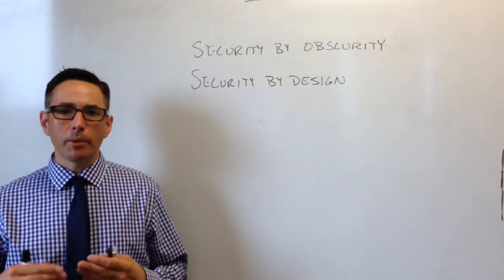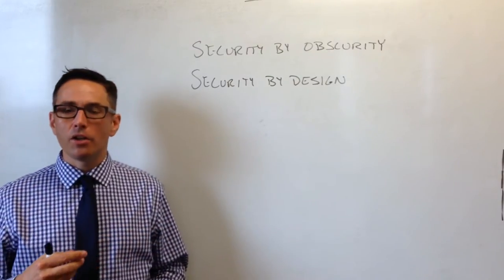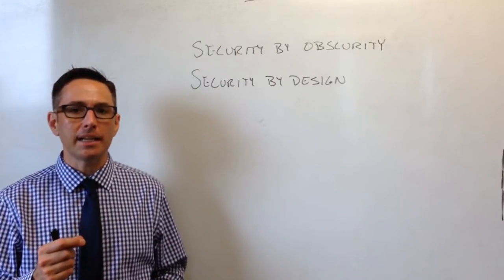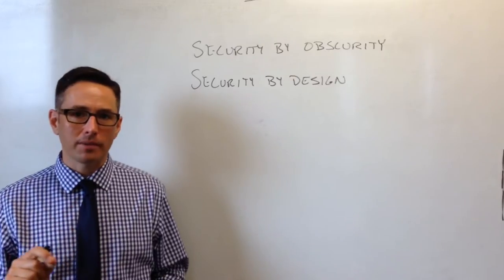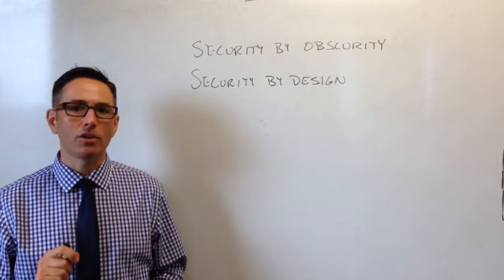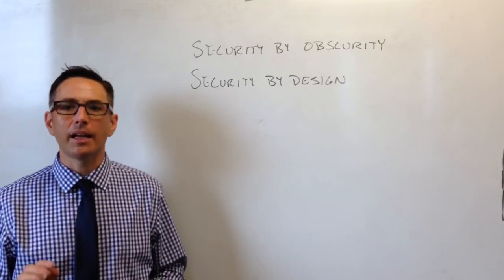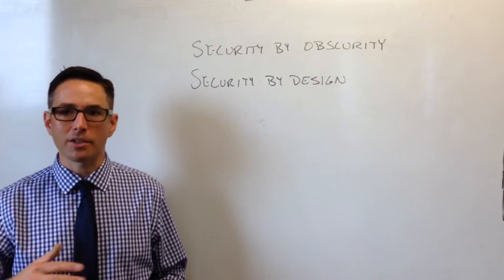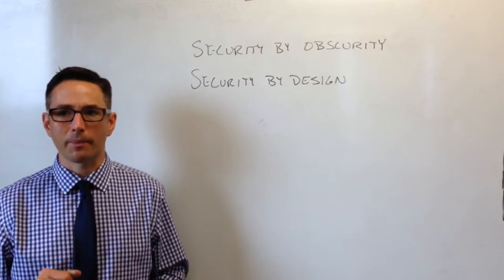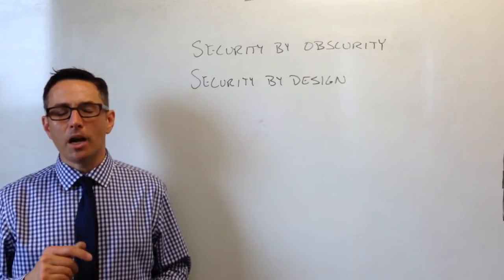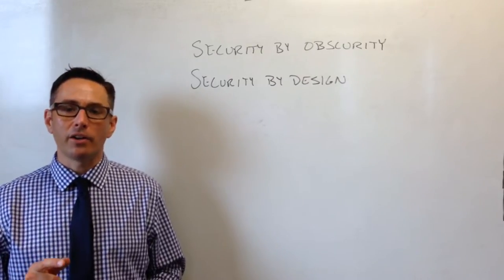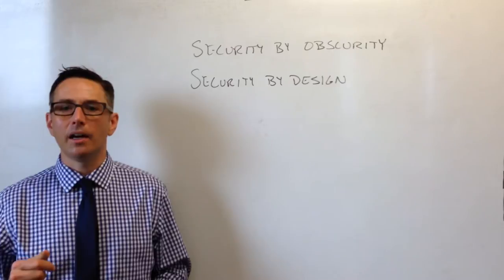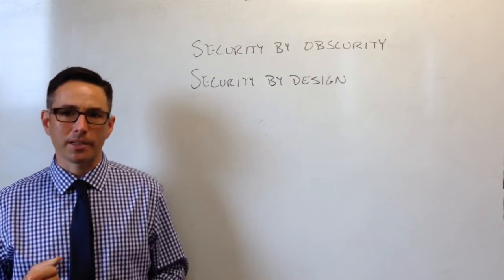When we bring this into computer code, security by obscurity means hiding your computer code, not letting anyone see the mechanisms or algorithms you use. Maybe it means hiding your website, putting a website up somewhere but not telling anyone where it is. Maybe it also means not telling people where the computers are that are involved in the transfer of money because if they knew where the computers were, they could intercept the money in the transmission.